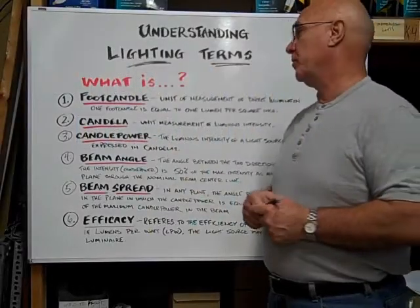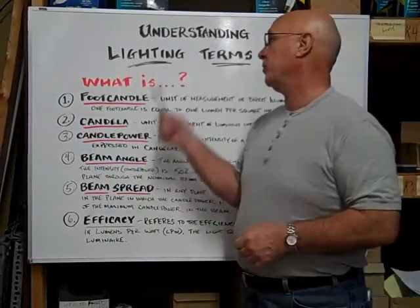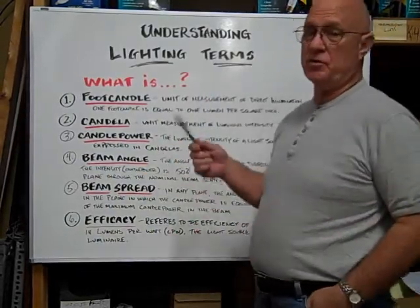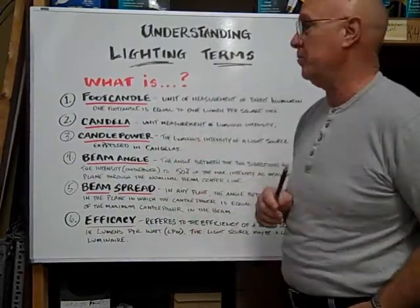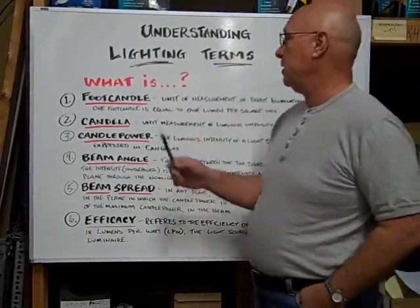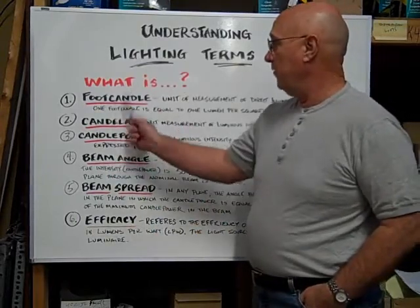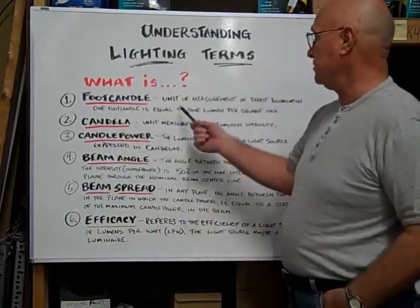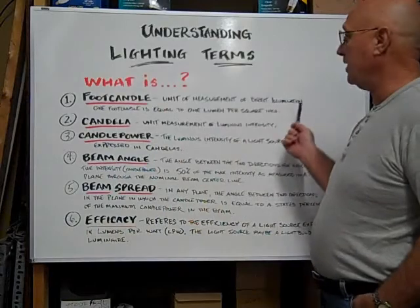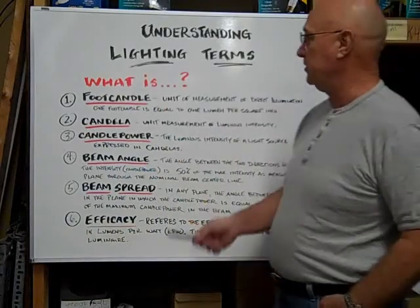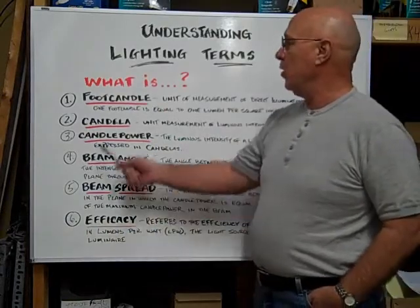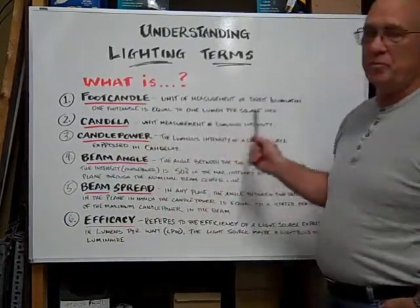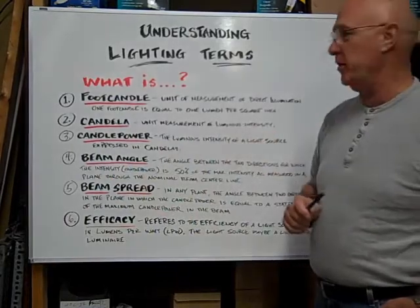Hi. Here at Bulbtown we want to help you understand lighting terms that you may encounter in your search for light bulbs. What is a foot candle? A foot candle is a unit of measurement of direct illumination. One foot candle is equal to one lumen per square foot.